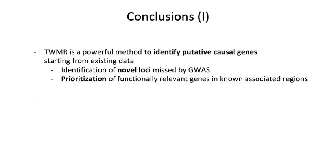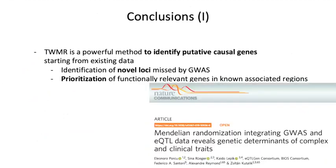In conclusion, TWMR is a powerful method to identify putative causal genes starting from already existing data. Not only can we identify new loci missed by GWAS, but we can also prioritize functionally relevant genes in already known associated regions. If you are interested in this method, you can find many more results in our paper published two months ago in Nature Communications.